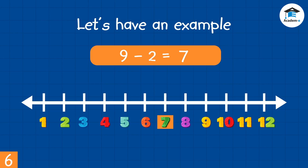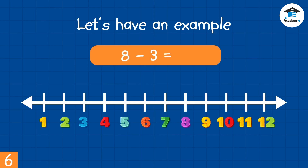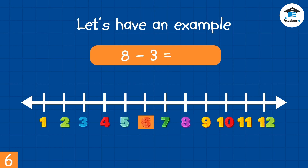Here's another example. 8 minus 3 is equal to? Let's use the number line. We start from 8, then count 3 steps backward: 1, 2, 3. We stop at 5. Therefore, 8 minus 3 equals 5.